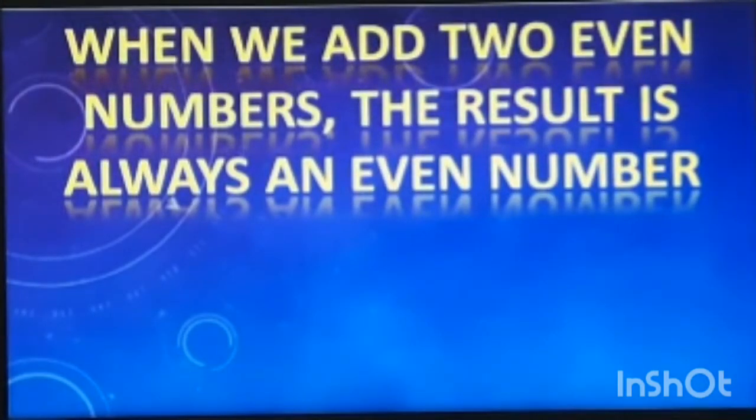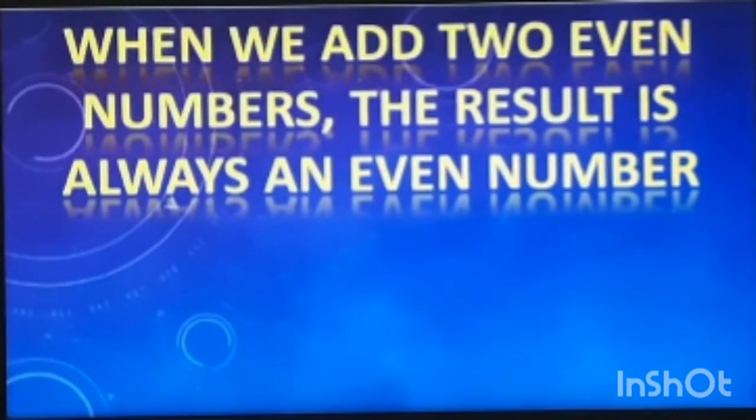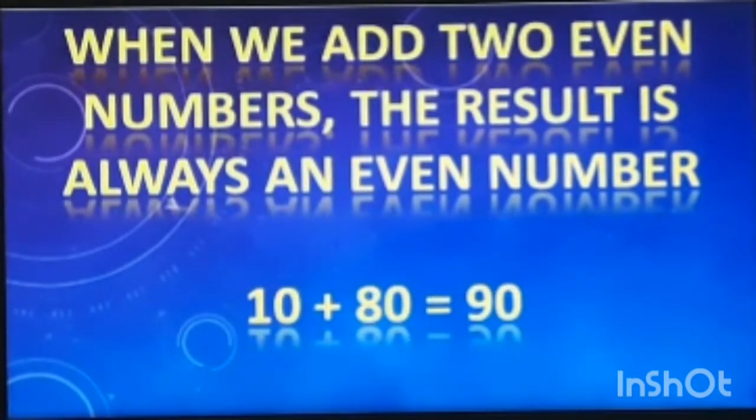When we add two even numbers, the result is always an even number. Let me take some examples so that you can understand this. 10 and 80 are two even numbers. When we add them, we get 90, which is again an even number.